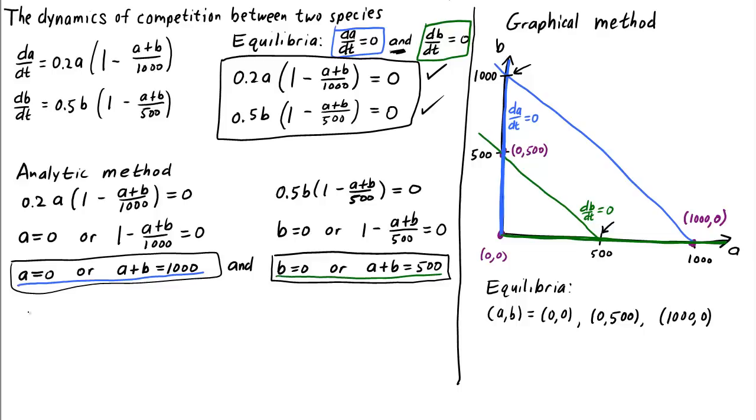To do this analytically, we just need to keep track of our ands and ors. For the first equation, the dA/dt equals zero condition, either A equals zero, or A plus B equals 1,000. We can pick either of these, so let's start off by looking at the case where A equals zero.